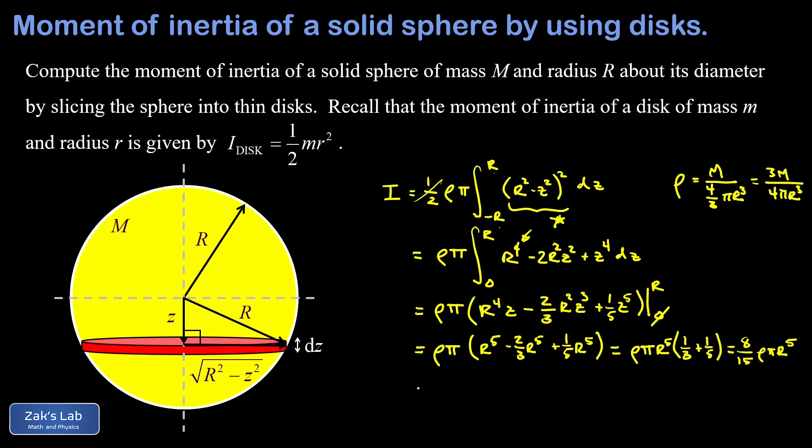So I end up with a moment of inertia of eight fifteenths times 3m over 4 pi r cubed. That was our density times pi times r to the fifth. And things start to clean up here. I can cancel a factor of 4 leaving me with a 2 in the numerator. Cancel a factor of 3 leaving me with a 5 in the denominator. So that gives me a two fifths for all of these constants. The pi's cancel. We're left with a factor of m. And three factors of r are going to cancel, leaving me with an r squared.